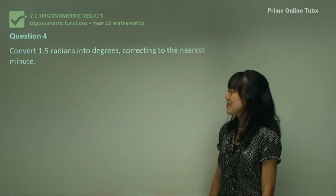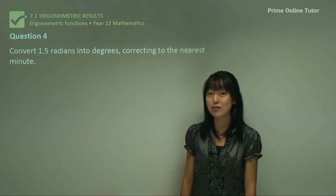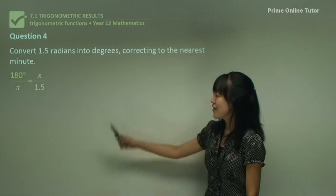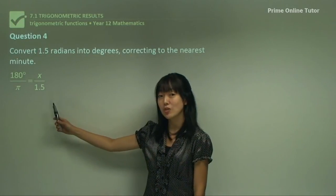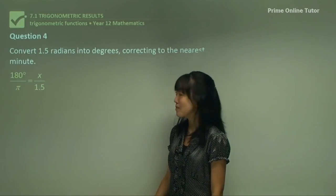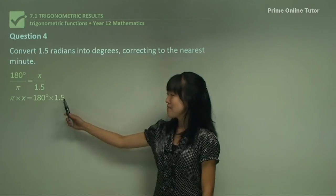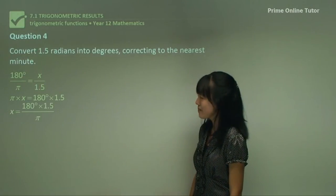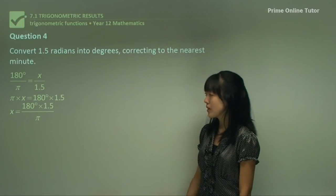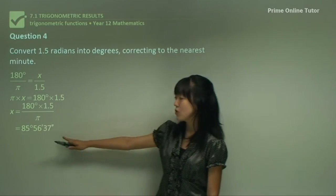Question 4. This is similar. We have to convert 1.5 radians into degrees correct to the nearest minute. First step is always writing the ratio which I've hammered into your head so I'm sure you understand it now. Cross multiply. Make x the subject so divide throughout by π and you get this. Now grab your calculators, put it in, and you'll get this.